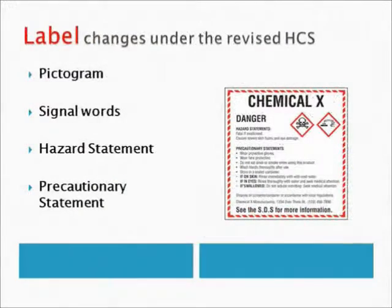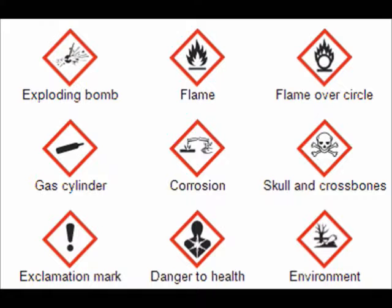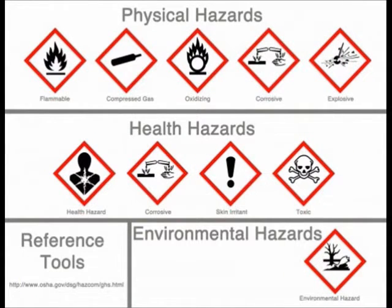We will now go into more details on label changes. Labels will require the following elements: a pictogram — a symbol plus other graphic elements such as a border, background pattern, or color that is intended to convey specific information about the hazards of a chemical. There are nine pictograms to convey the health, physical, and environmental hazards. Eight of these pictograms are required, the exception being the environmental pictogram, as environmental hazards are not within OSHA's jurisdiction.